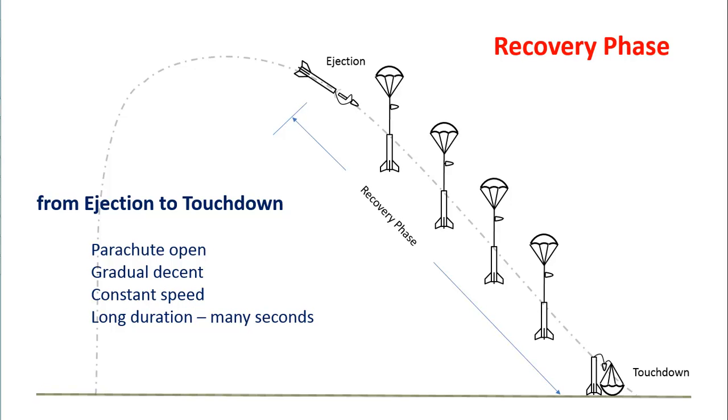Once the rocket ejects the recovery system, it enters what's called the recovery phase. This means that the parachute has been deployed and it opens. The rocket's now floating down on the parachute. So you get a gradual descent that's at a constant speed. And it lasts for a long time. It's really the longest part of the rocket flight.